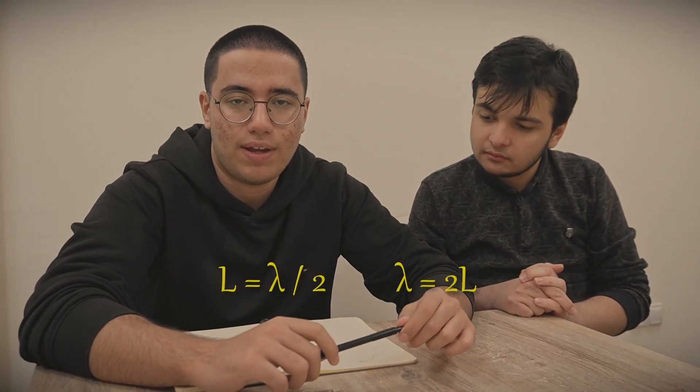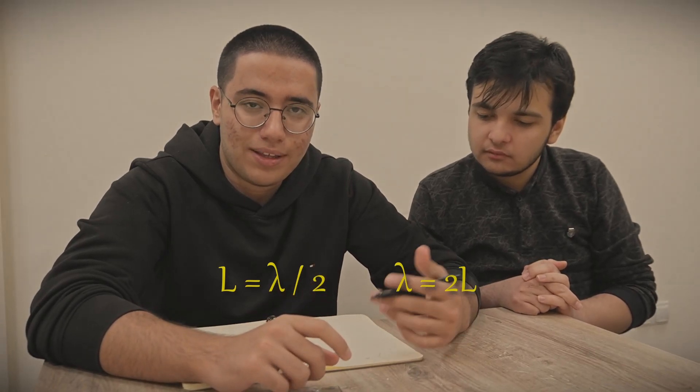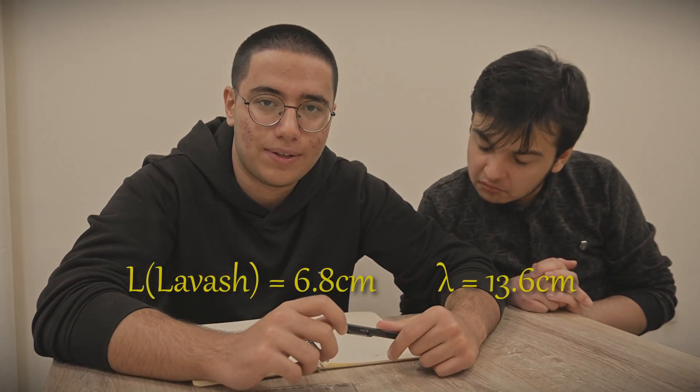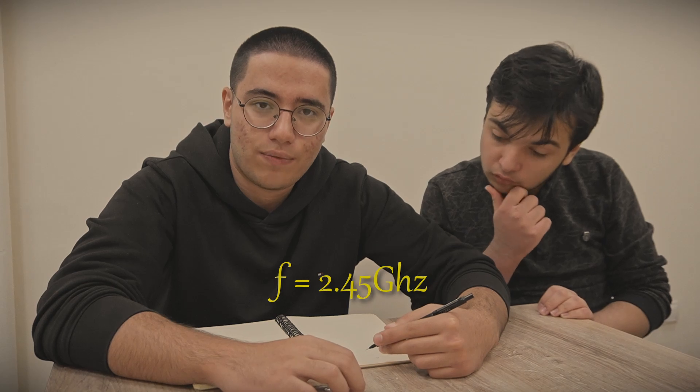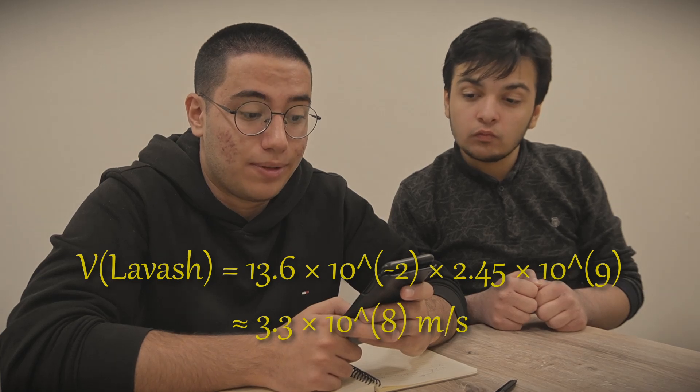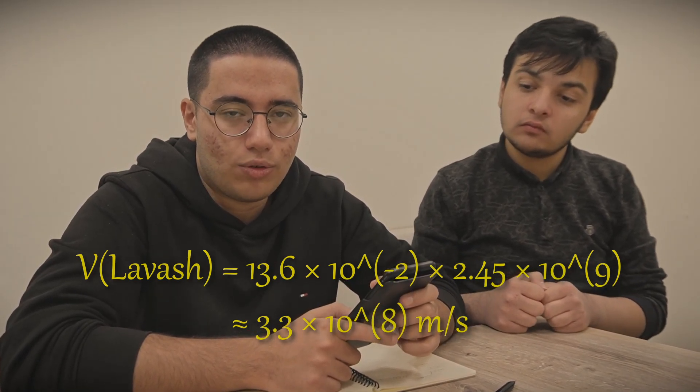For lavash, we got our measurement as 6.8 centimeters, but that is not our real wavelength. Since we have standing waves in the microwave, we need to multiply it by two, and we get 13.6 centimeters. We know the frequency as 2.45 gigahertz, and by using the relation — give me the calculator — we get approximately 3.3 times 10 to the power of 8.